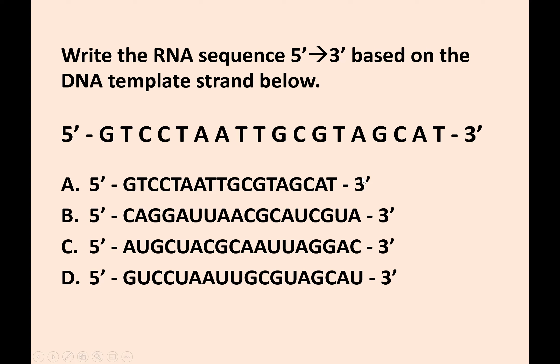Now, figure out the RNA sequence 5' to 3' based on the DNA template. The first thing you can do is eliminate anything with T's — there are no T's in RNA. We're going to copy 5' to 3', so we get A, U, G, C, U, A. The answer is C. It has to be anti-parallel, and sometimes you have to flip things to figure out the right answer. One option is not right, even though it follows base pairing, because it's the wrong orientation or direction.